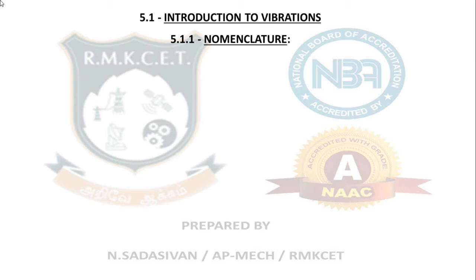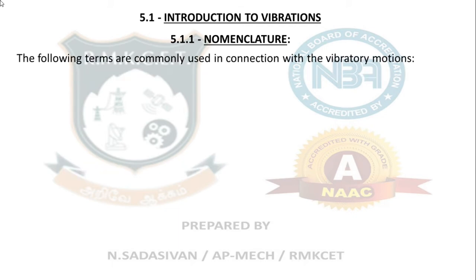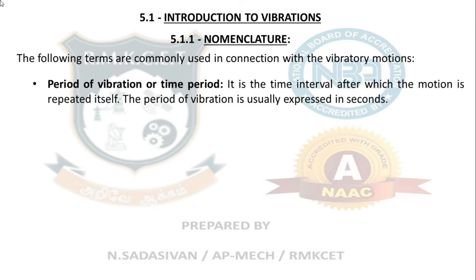Introduction to vibrations. There are some important terms you should know when studying vibrations. The first is period of vibration or time period. Take the simple example of a simple pendulum: from the center point, one maximum amplitude to the right, then full amplitude to the left, then back to the mean position — that is called one period. It is the time interval after which the motion repeats itself, usually expressed in seconds.